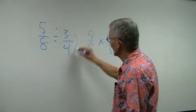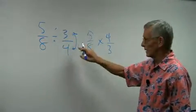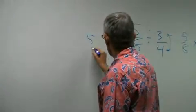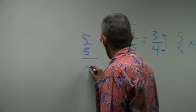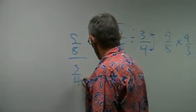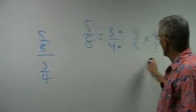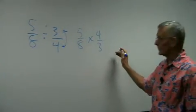I take 5 over 8 times 4 over 3. Notice I inverted this fraction. You always invert the one behind the sign. Or if it's written in this form, it's behind the sign or below the line is the one that you invert. So now I make it into a simple multiplication problem.